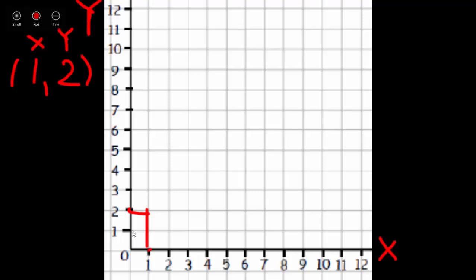This point here on our coordinate plane can be labeled just like our ordered pair is here, 1, 2.